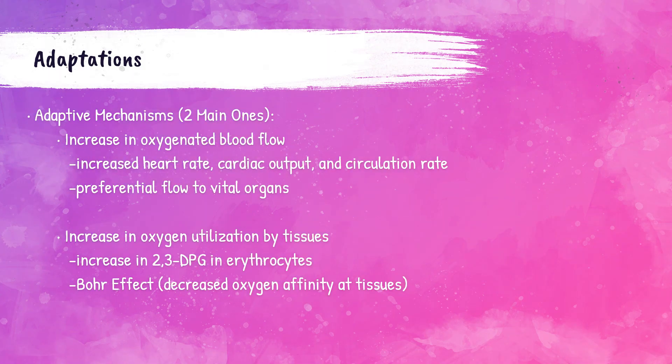There are two main adaptive mechanisms the body has to help when the patient has anemia. The first one is that the body tries to increase the oxygenated blood flow. The red cells are what carry the oxygen to the body's tissues, so if there is a decrease in hemoglobin or red blood cells, the body wants to stay oxygenated. It's going to try to increase the flow of oxygenated blood to vital organs by increasing the heart rate, blood circulation rate, and increasing the output of the heart — all trying to provide oxygenated blood to vital organs for as long as it possibly can.